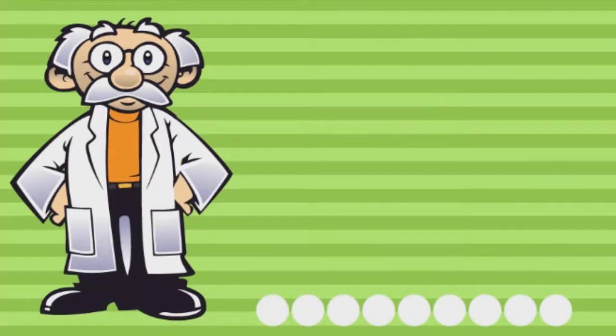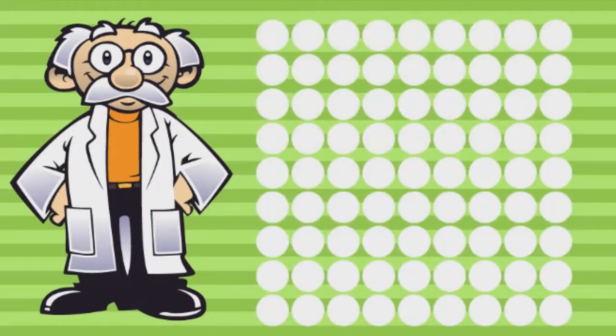Mass and volume are properties of matter. Mass is the amount of matter an object has. Volume is the amount of space an object takes up.